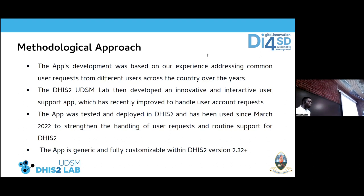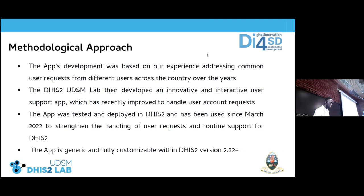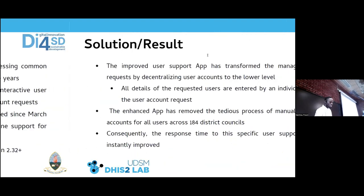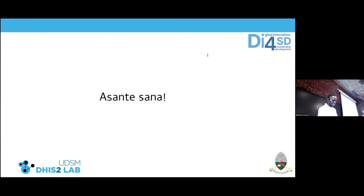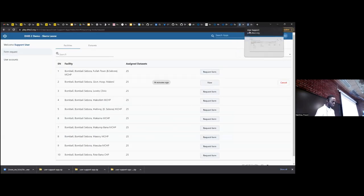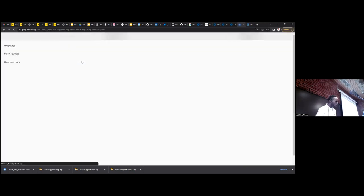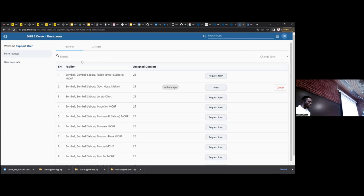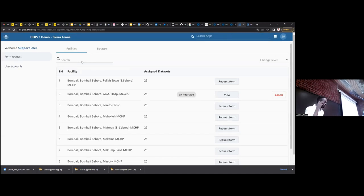The app was tested on DHIS2 platform and by 20 March 2022, we deployed it to the live instance of our ministry. Since then we've been using it in the country and have seen significant changes in the need for human resources to support people from those facilities. It works from DHIS2 version 2.40. Now let me go directly to the demonstration. I've created a user called 'User Support' on the 2.40 instance. This is an example interface where a normal user will be able to see the User Support App. For now it has a user form request and a user account request — we intend to have the validation request as well, but haven't finished that yet.